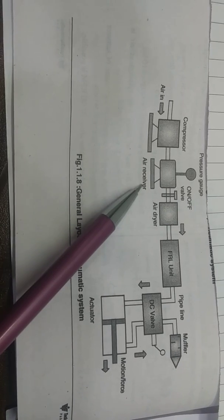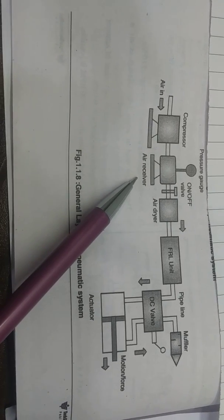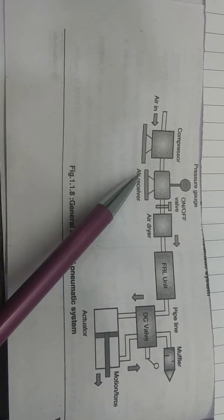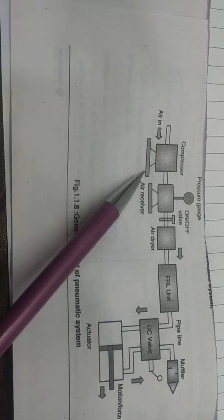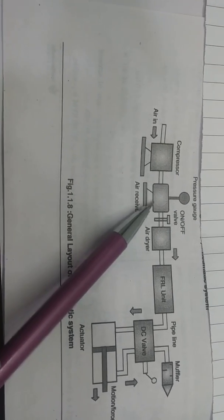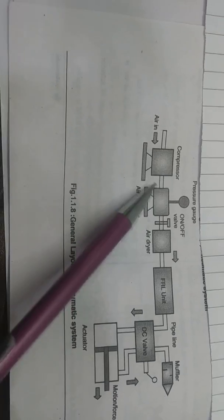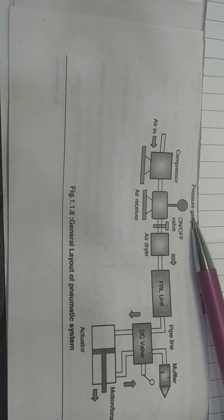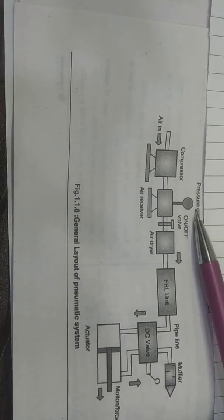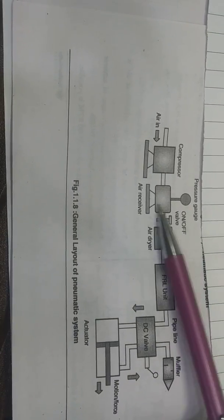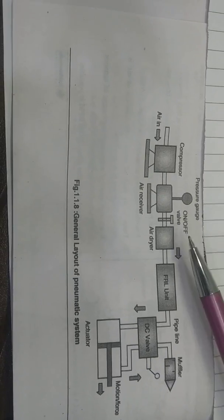The next component of the pneumatic layout is the air receiver, or air tank, which receives the compressed air from the compressor and stores it at high pressure inside the tank. On the top of the tank, a pressure gauge is provided which shows how much pressure of the air is developed inside the receiver.